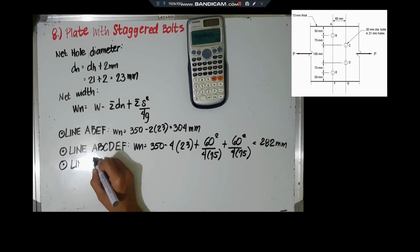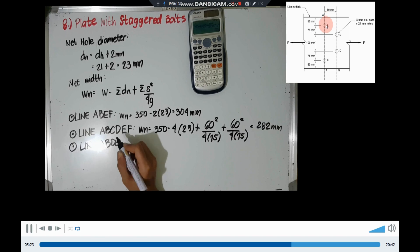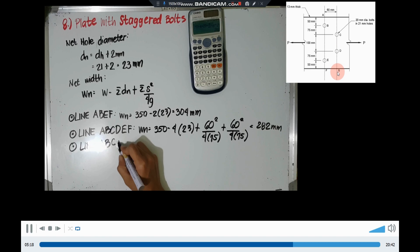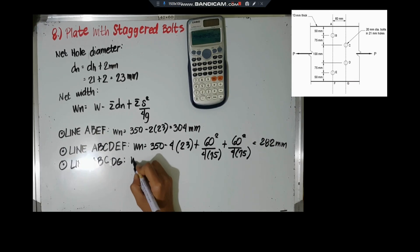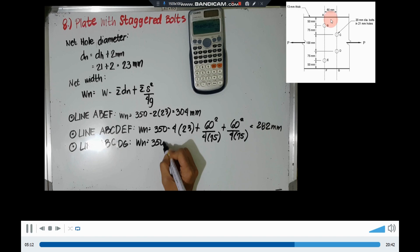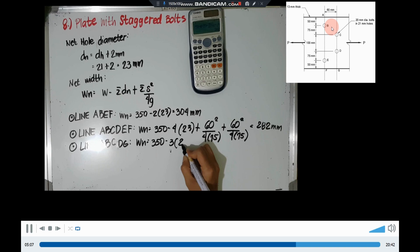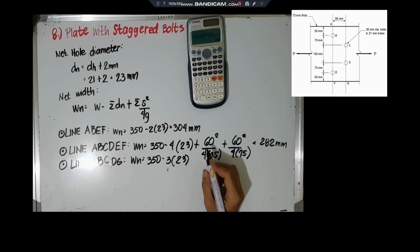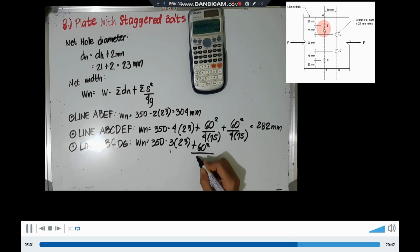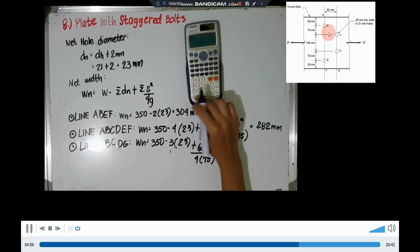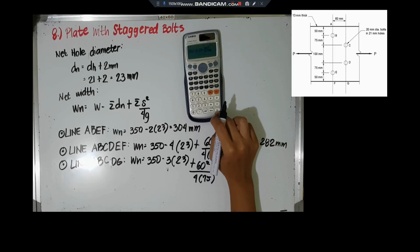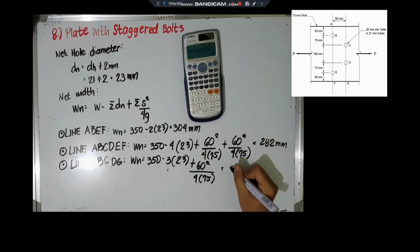Next, for fracture line ABCDG: 350 minus 3×23, plus 60²/(4×75). This equals 293mm.